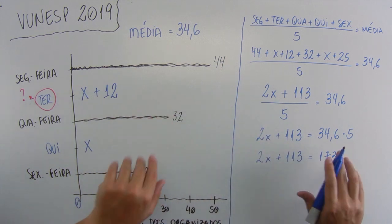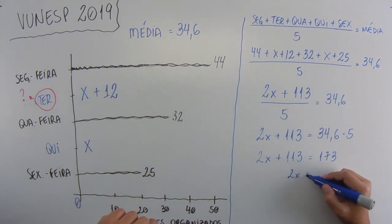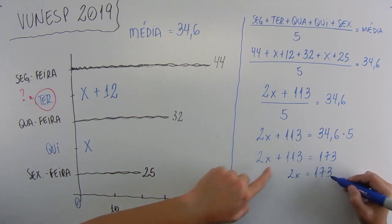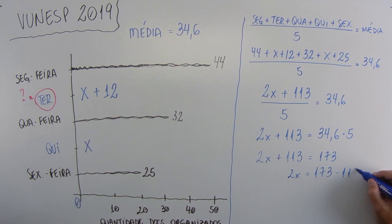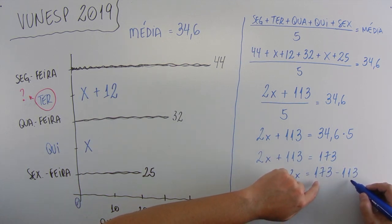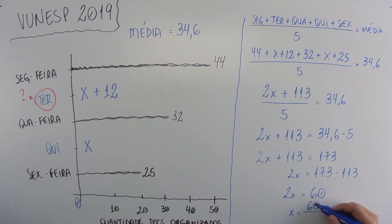We multiply in cross, it will be 2X plus 113, equals 5 times 34.6. Let's just indicate. Then, it will be 2X plus 113. 34.6 times 5 will give 173. Everything that has a letter on one side, everything that doesn't have on the other, it will be 2X equals 173. This 113 that is positive will pass to there negative minus 113. 2X equals 173 minus 113, which is 60. This 2 that is multiplying will pass dividing. X equals 60 divided by 2. And then, we find the value of X.